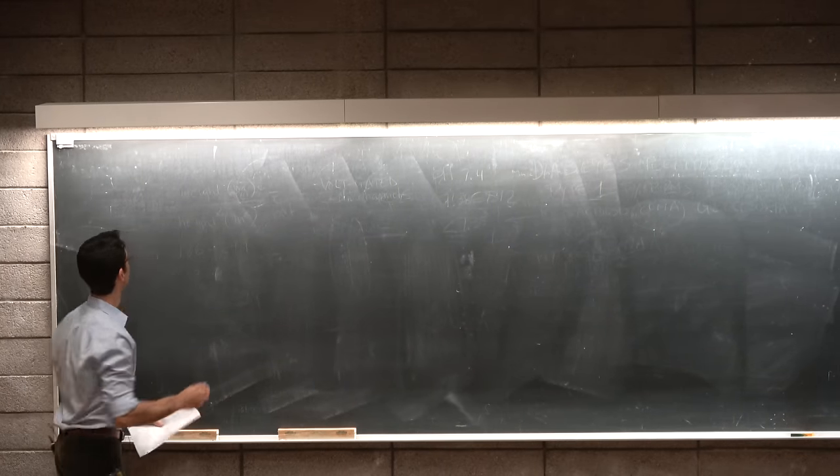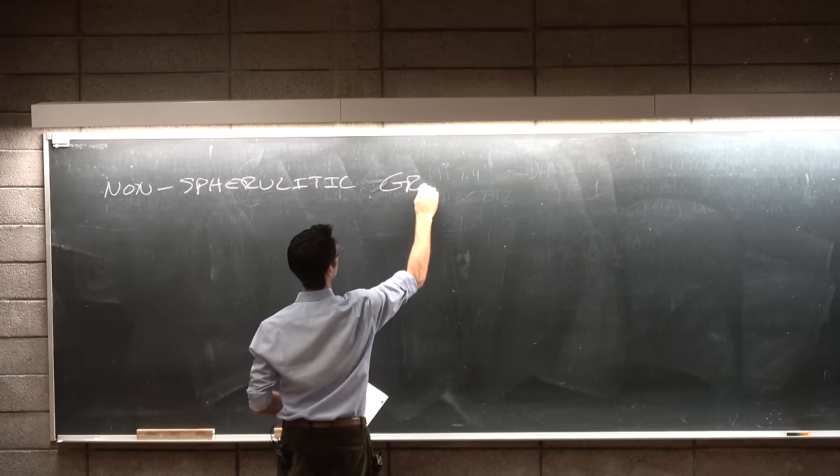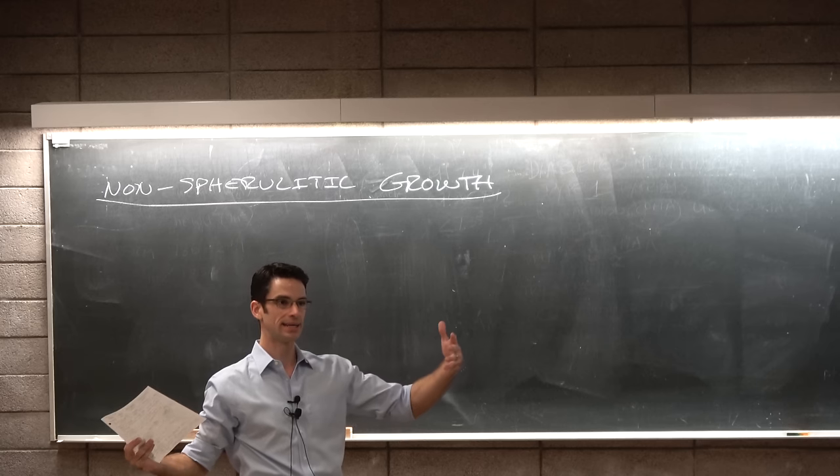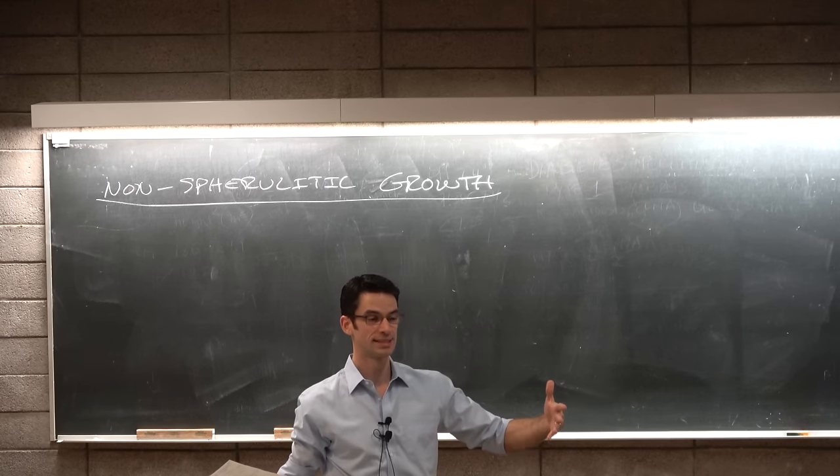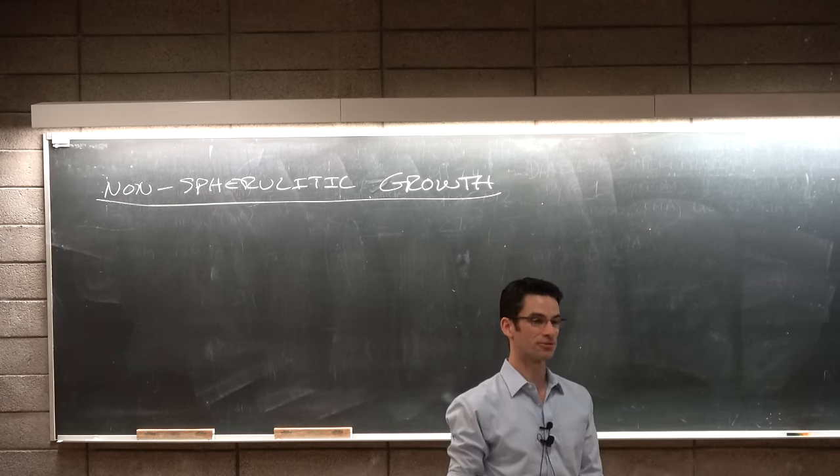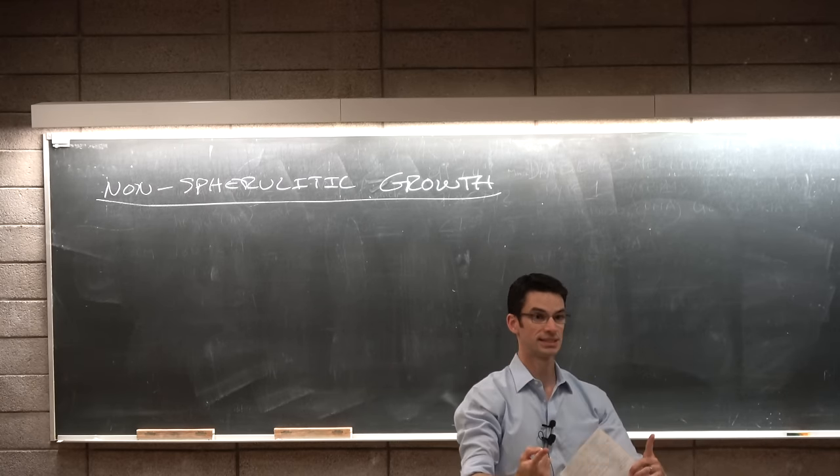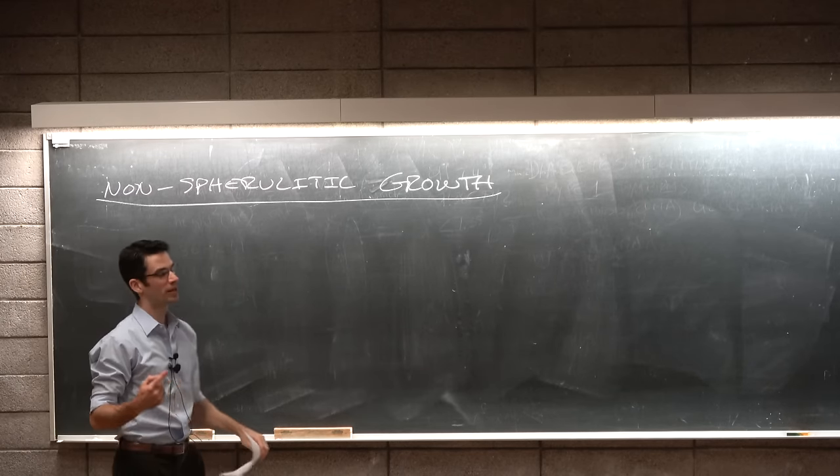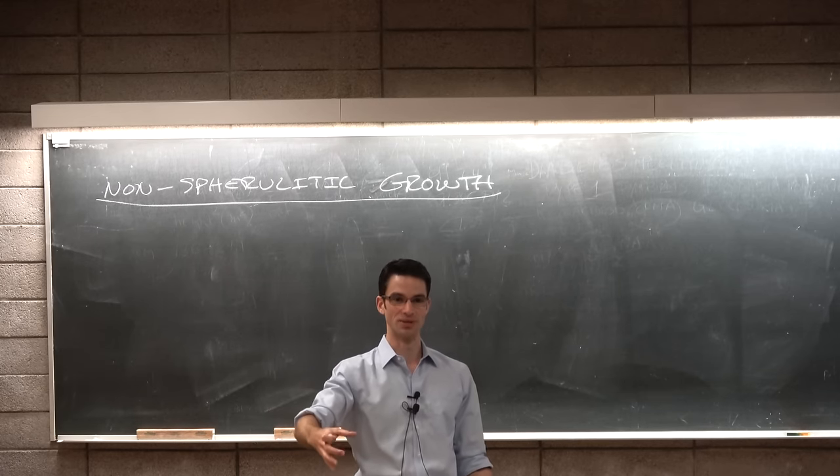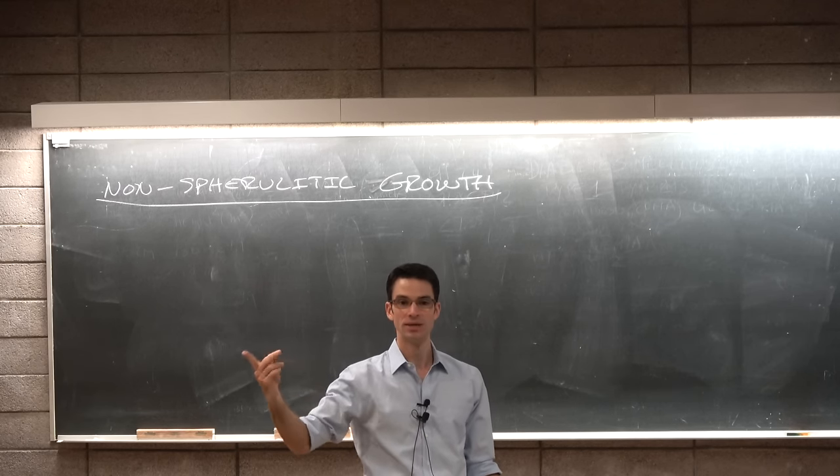How about non-spherulitic growth? So sometimes spherulites are what grow when you have a melted polymer and you cool it down relatively slowly. And this is how the film solidifies. You get polymer chains that add with equal probability anywhere along the periphery of this sphere.